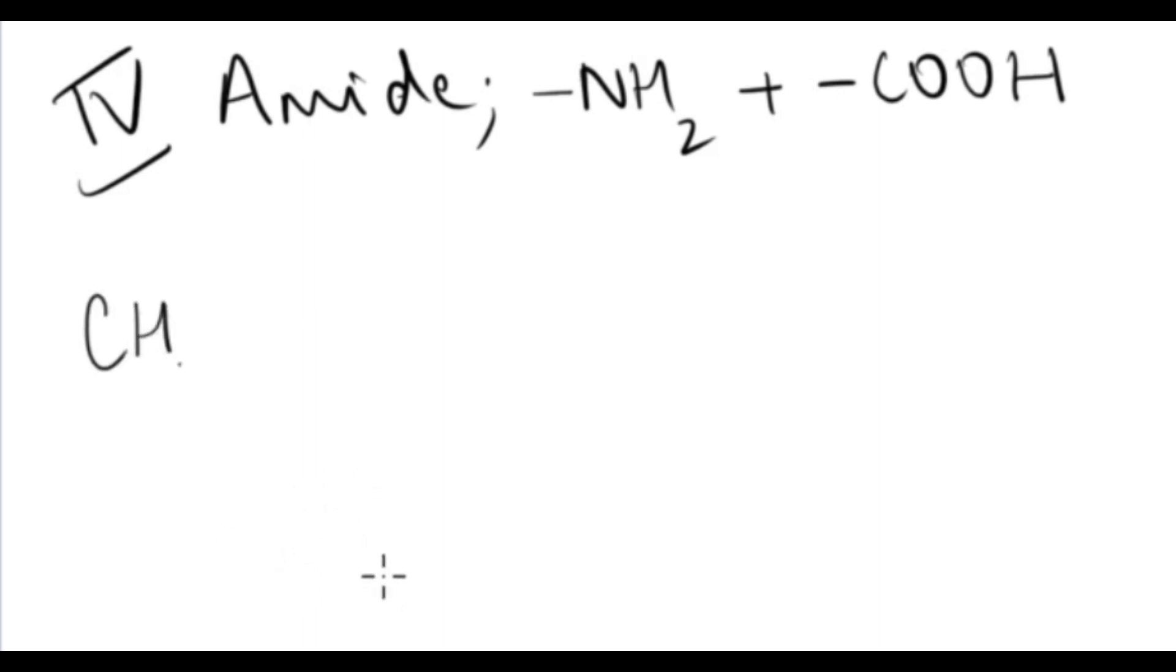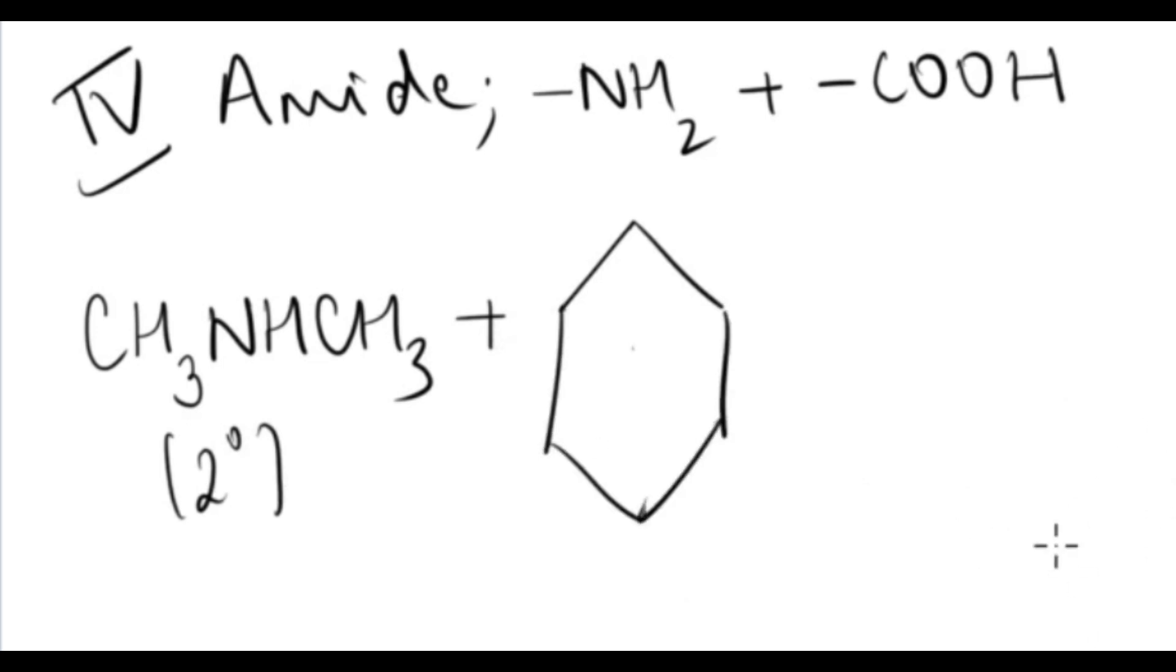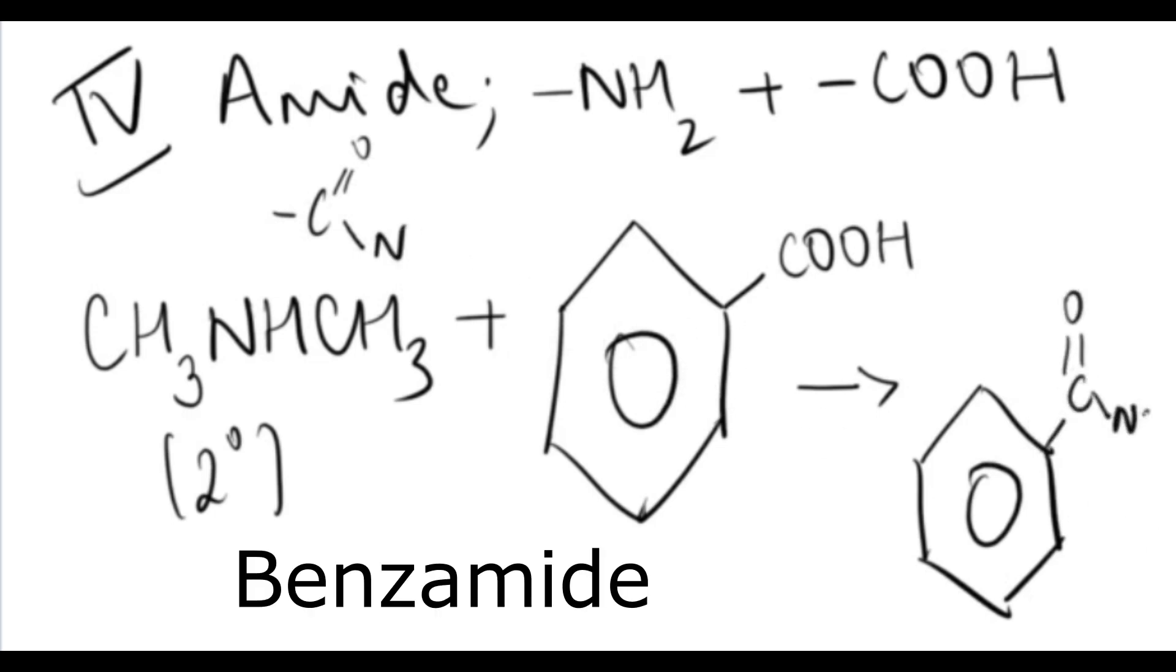Number four was formation of amides. If you react a carboxylic acid with an amine, you're going to get an amide. An example is here is a secondary amine, you can say it's dimethylamine, and you reacted with benzoic acid. Again, you're going to get benzamide and a water molecule.